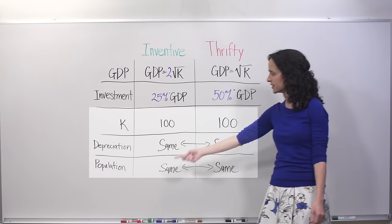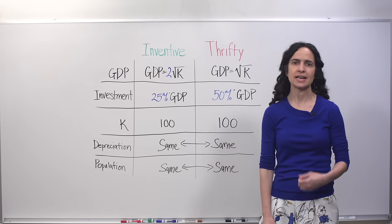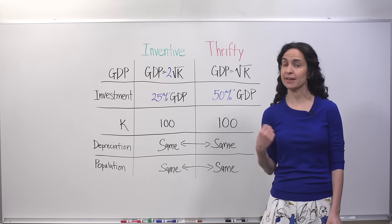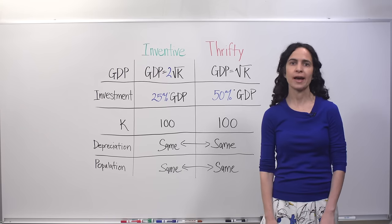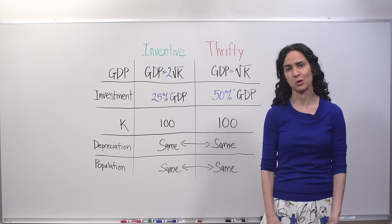And everything else is the same: capital stock, depreciation rates, and population. So what this question is really asking is, is it more important for a country to have a high savings rate like Thrifty or have more ideas and therefore be more productive like Inventive? Where would you prefer to live?